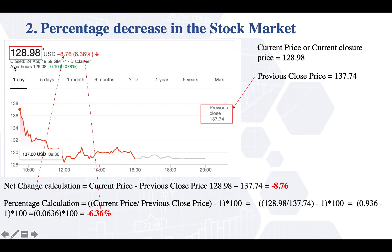So this is the principle. And another example to confirm that all our calculations are correct: if you take 6.36% — keeping in mind this is always a percentage — and do 0.0636 times this value, you're going to get exactly $8.76. I hope it has been clear. If it's not, please just write a comment on this video. Thanks.